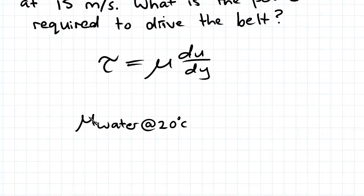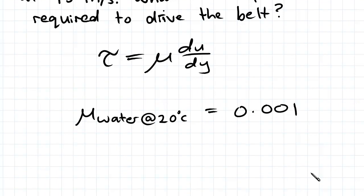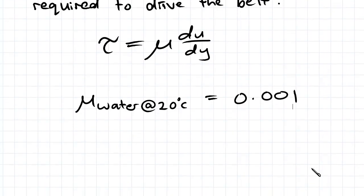So mu at 20 degrees Celsius for water is equal to 0.001. You should try to remember that number, it comes in handy to make your working out quicker.